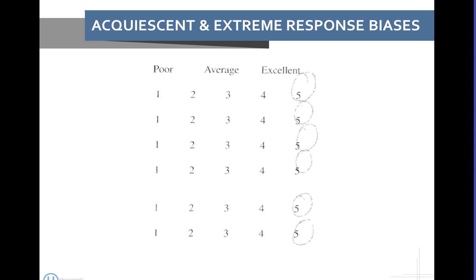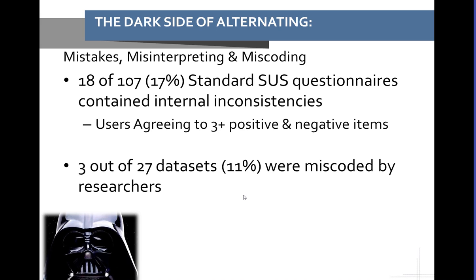Part of the reason items alternate from positive to negative is to reduce what are called acquiescent and extreme response bias. You might be familiar with this if you've seen a participant race through and just say five, five, five, yes, everything's great. One way to get participants to think more is by throwing in alternating items to reduce the extreme response bias of always agreeing or acquiescing with fours or fives. By alternating, it forces the participant to reconsider and change their responses.